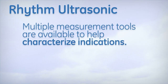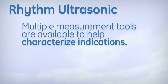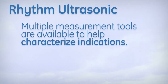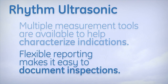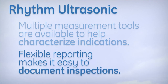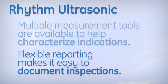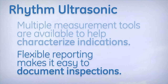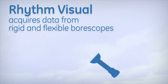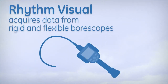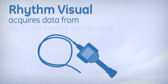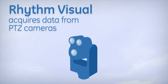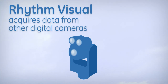Multiple measurement tools like a sizing assistant are available to help characterize indications, and flexible reporting makes it easy to document inspections. Rhythm Visual acquires data from rigid and flexible bore scopes, PTZ cameras, and other digital cameras.